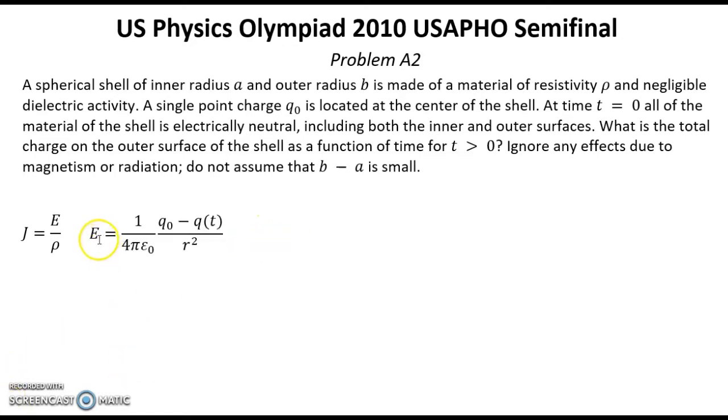So for electric field we have this equation: that total electric charge equal 1 over 4π epsilon 0, multiplied by total charge inside of this sphere, which is Q0 minus Q, where Q is a charge on internal surface, and divided by R squared.